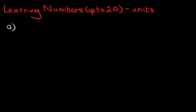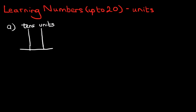What we do first is we will draw our abacus. Now we went through this in the previous tutorial, so you know what this is. On the right hand side we're going to label it units — always start from the right. Units. The one left to it is the tens. So we've got tens and units.